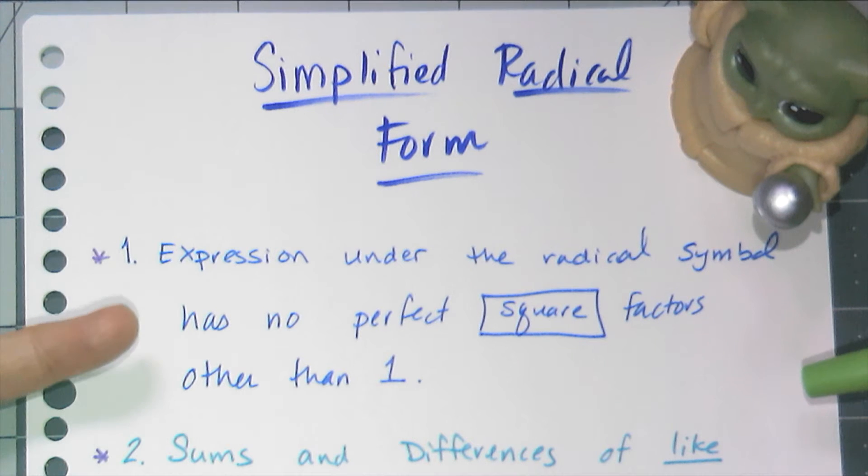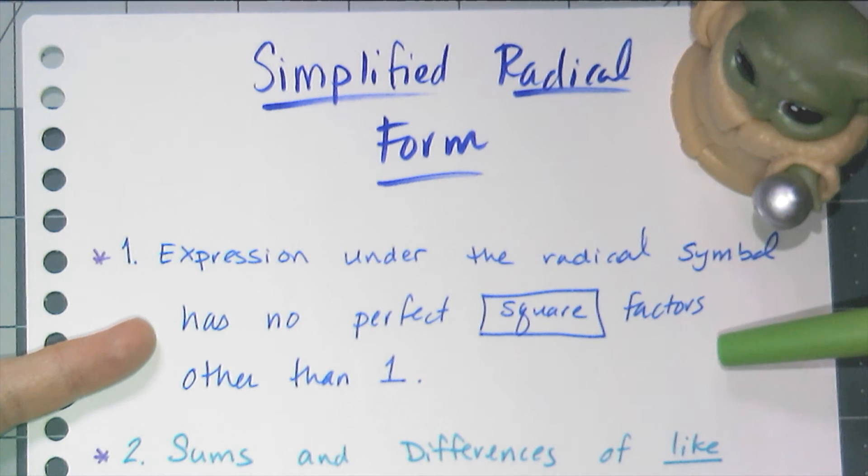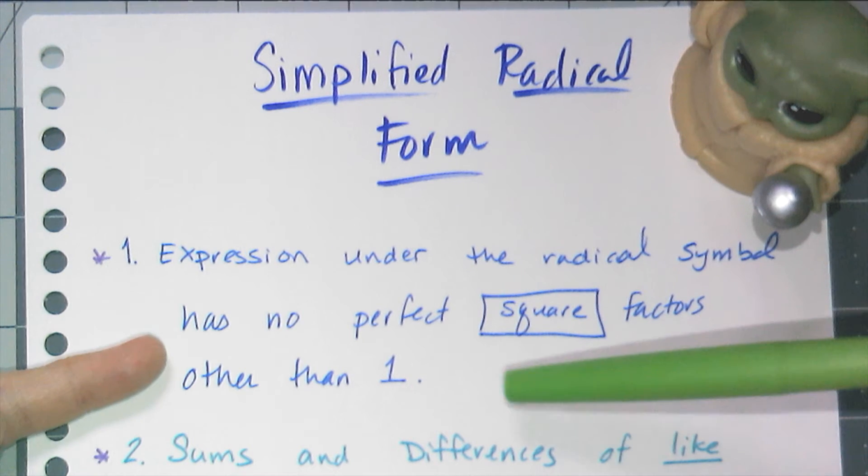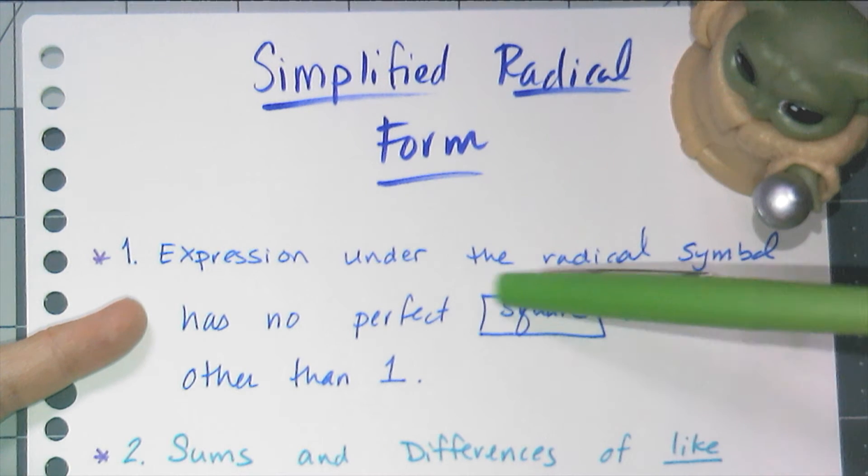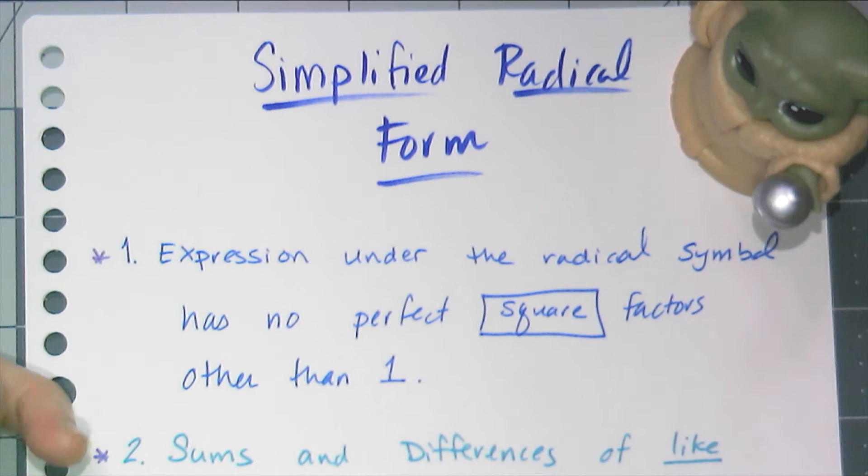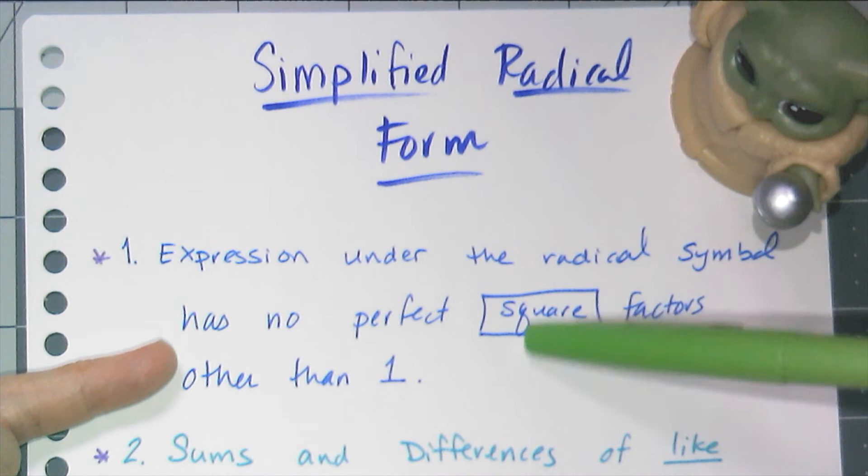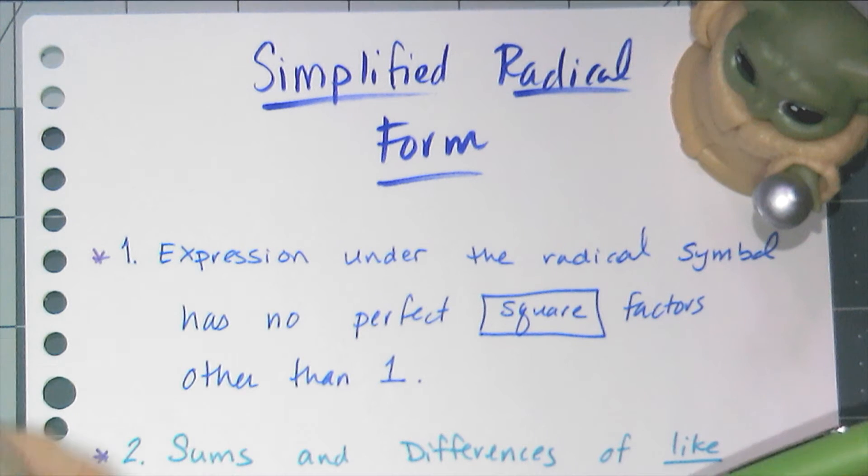Alright, so let's start off with the first rule. The first rule says the expression under the radical symbol has no perfect square factors other than 1. And you'll notice I put a little rectangle around square—that's not because the square is a rectangle, but because this actually can be replaced depending on the type of radicals you have.